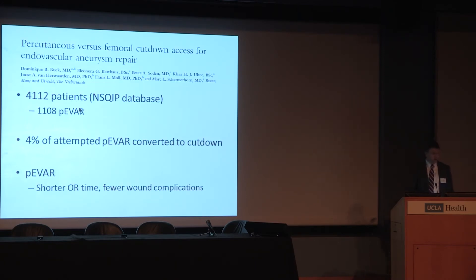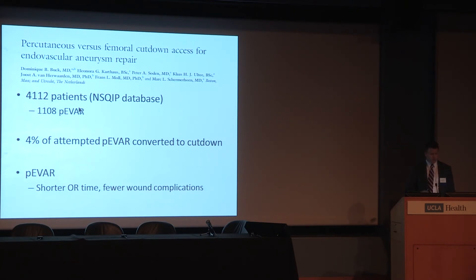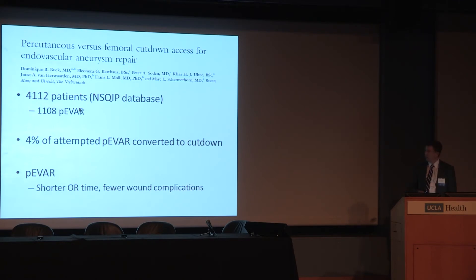Regarding the data on percutaneous versus femoral cut-down: a review of a database of about 4,000 patients — a modern series — found roughly 1,000 were done percutaneously. There's a selection bias since high-risk patients were offered cut-down, but it shows that in a modern series at least a quarter or more of patients undergo a percutaneous approach. Four percent of attempted percutaneous procedures were converted to cut-down, so there is a defined but relatively low failure rate. The paper concluded that percutaneous access allowed for shorter procedure times, fewer wound complications, and shorter hospital stay.